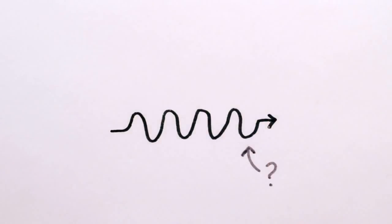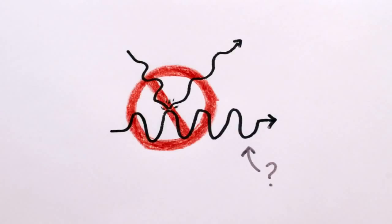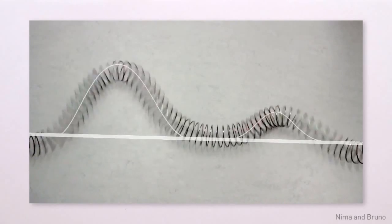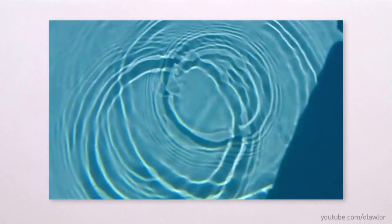But how do we see light itself? You can't bounce light off of light, just like you can't bounce slinky waves or ripples in the water off of each other, they just pass right through.